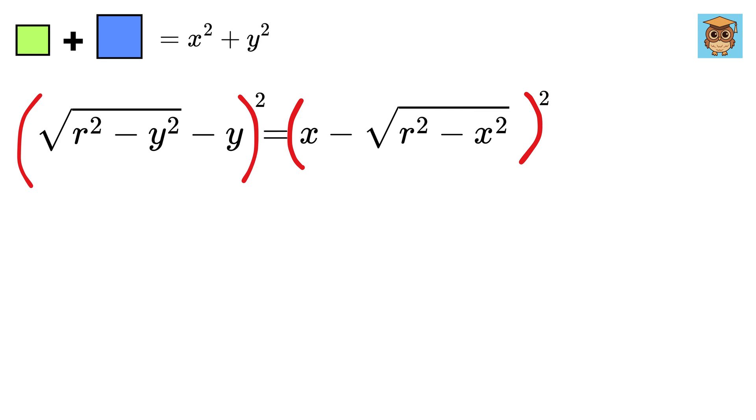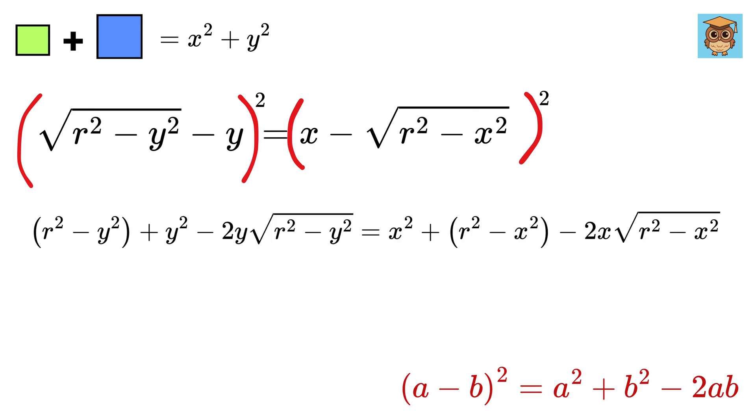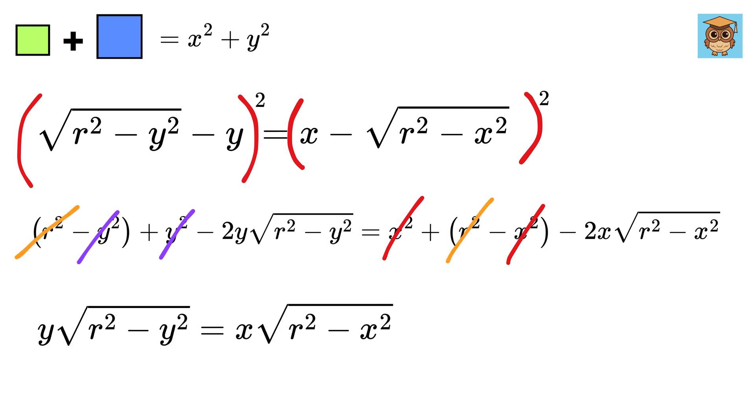Now square both sides of this equation and expand using (A minus B) whole squared formula to get this. Look at this beauty. So many terms get cancelled out like x squared, y squared, and R squared. And we are only left with this part.